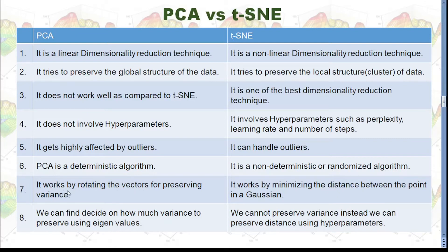PCA works by rotating vectors for preserving variance, while t-SNE works by minimizing the distance between the point in a Gaussian. I'm going to explain that in detail later. In PCA, we can find and decide on how much variance to preserve using eigenvalues. In t-SNE, we cannot preserve variance. Instead, we can preserve distance using hyperparameters.